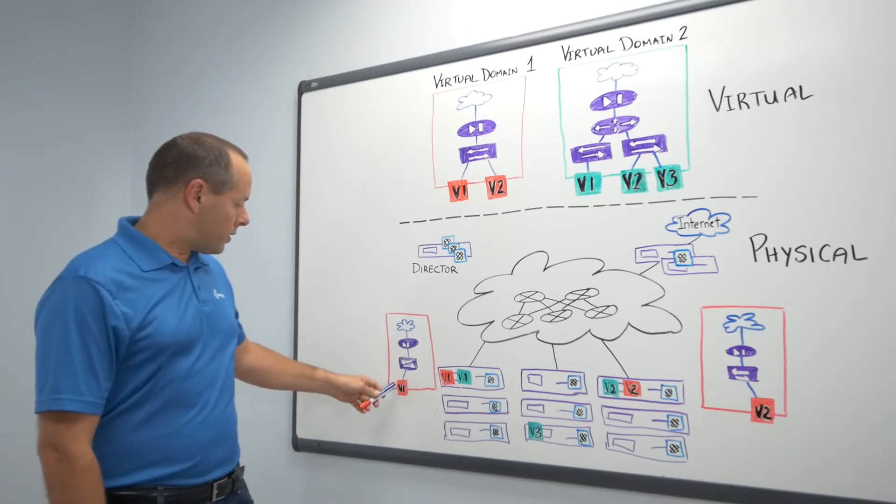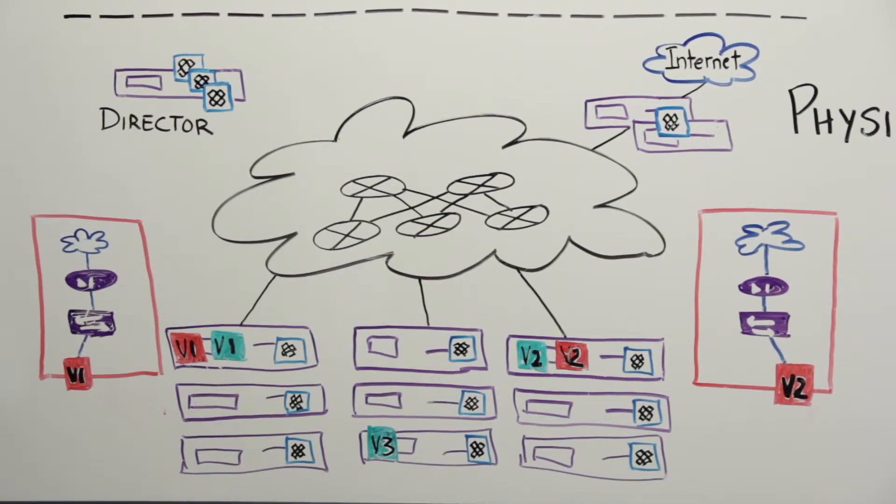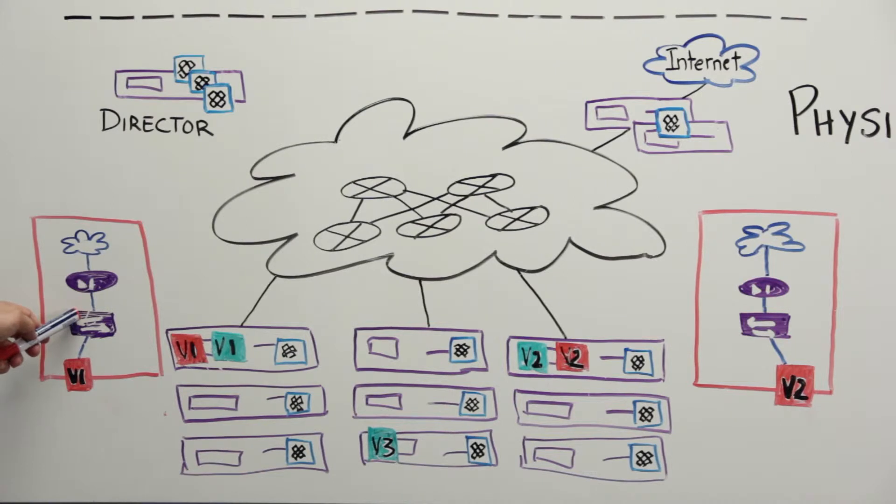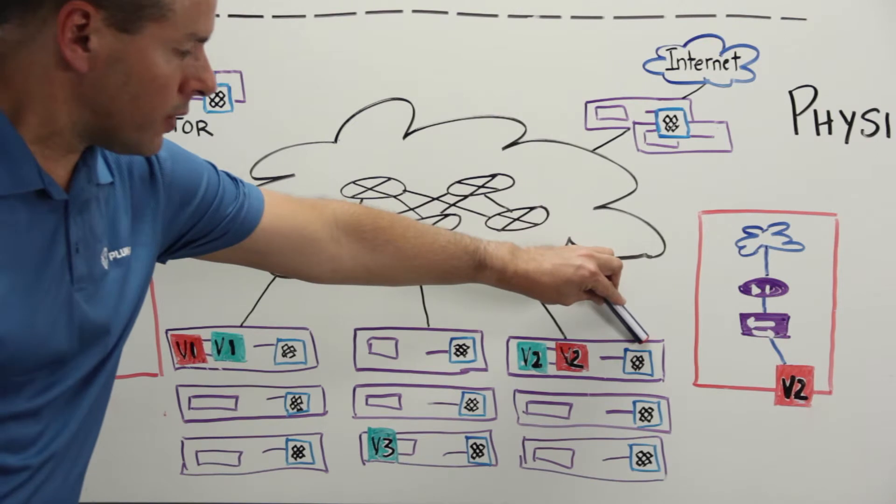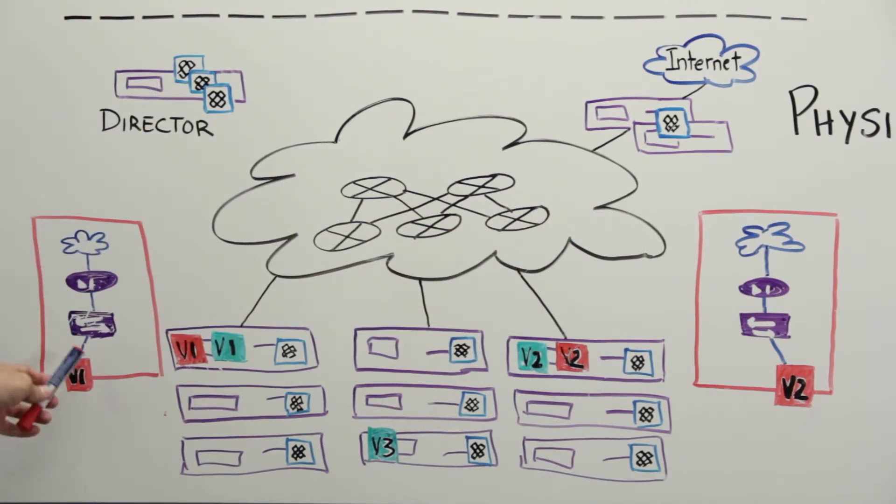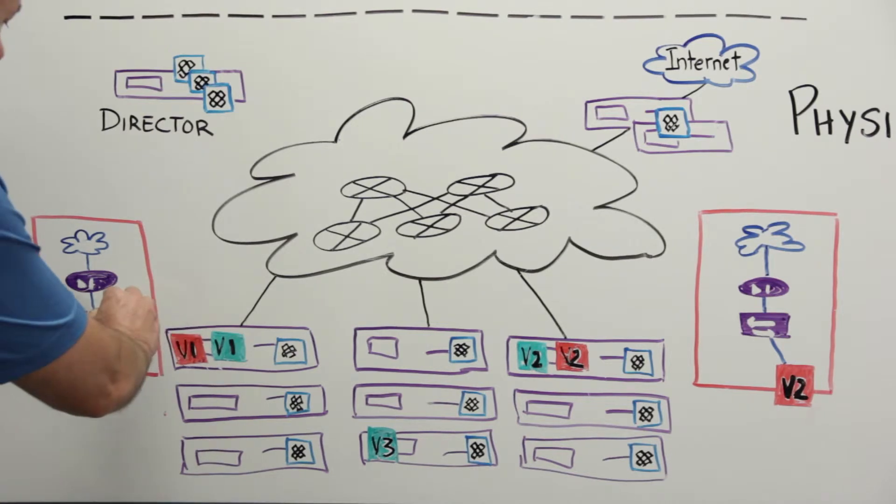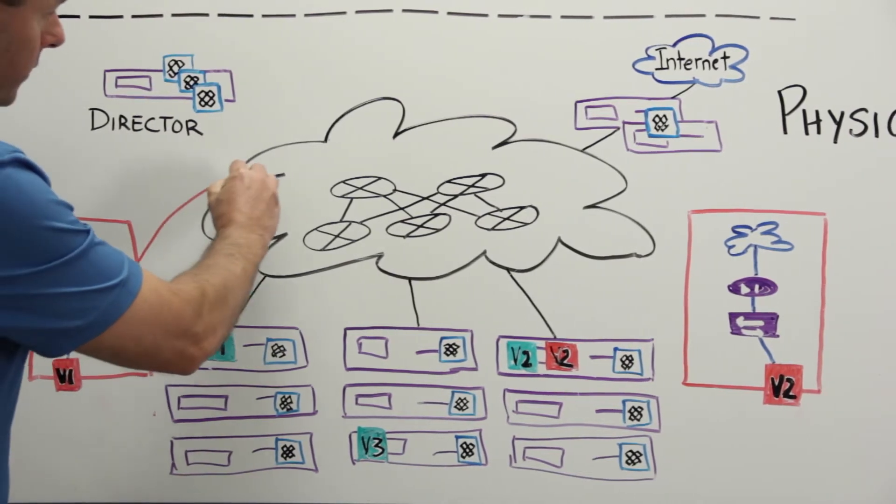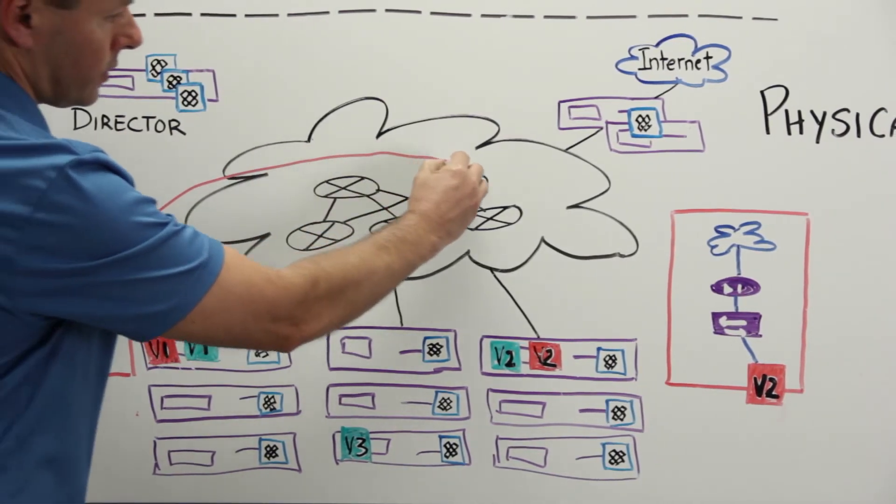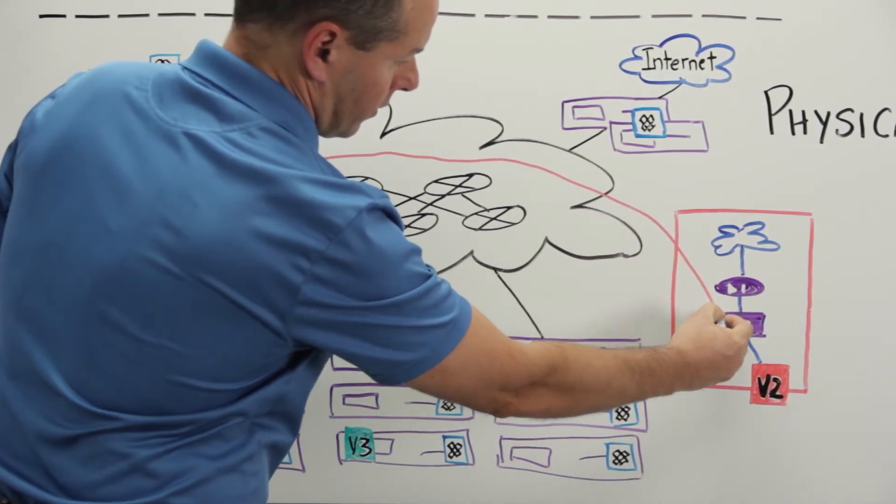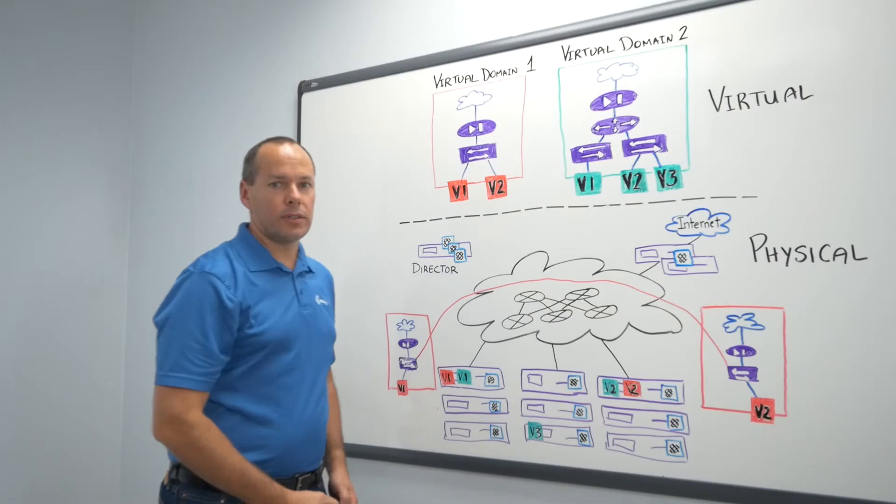Virtual machine 1 will communicate to the bridge and say, I'm looking for virtual machine 2. The bridge would then do a lookup function to determine where virtual machine 2 is. It determines that it's over on this physical host over there. So the bridge would then build a VXLAN tunnel from itself through the physical network infrastructure over to this bridge over there, which will then forward the traffic to virtual machine 2.